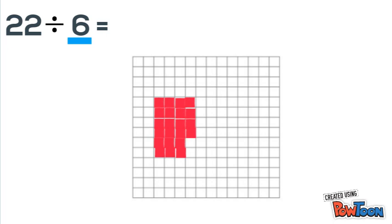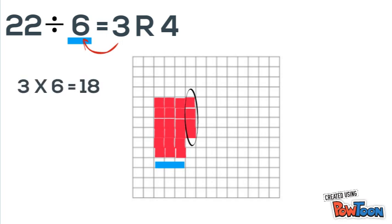So 22 divided by 6 gives us 3 with a remainder of 4. And again, we can check this by doing 3 times 6 is 18, and 18 plus 4 gets us back to 22.